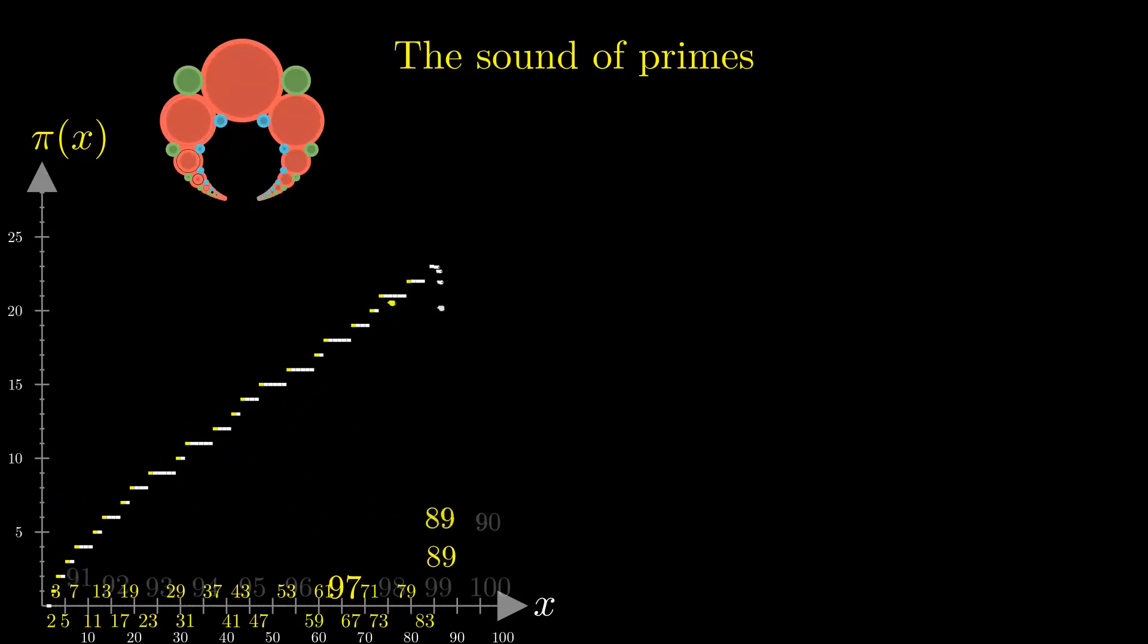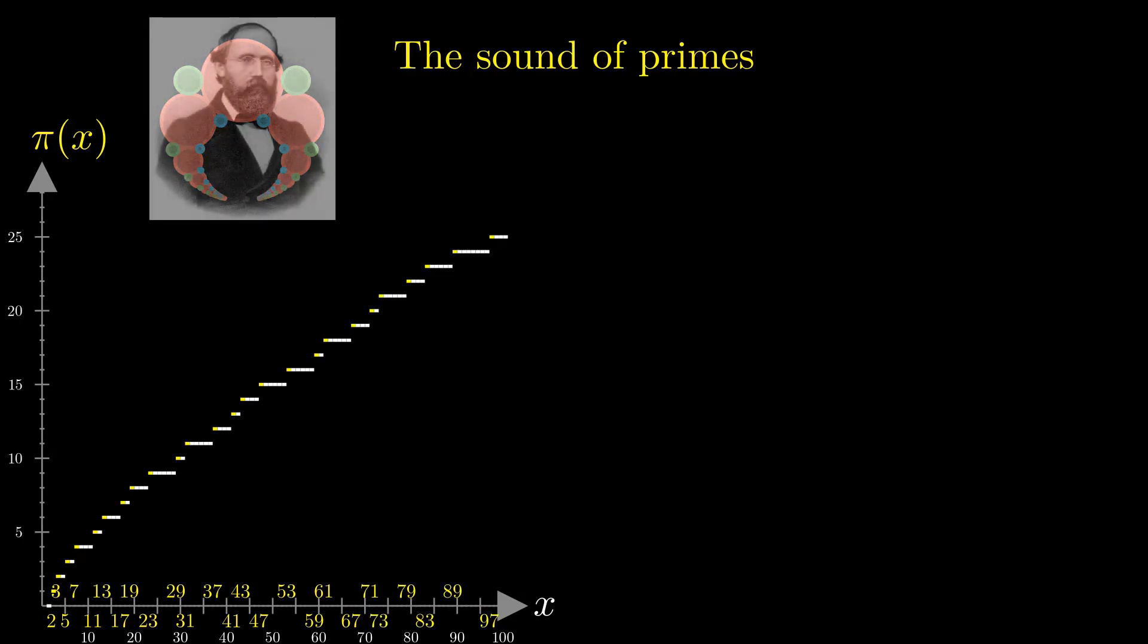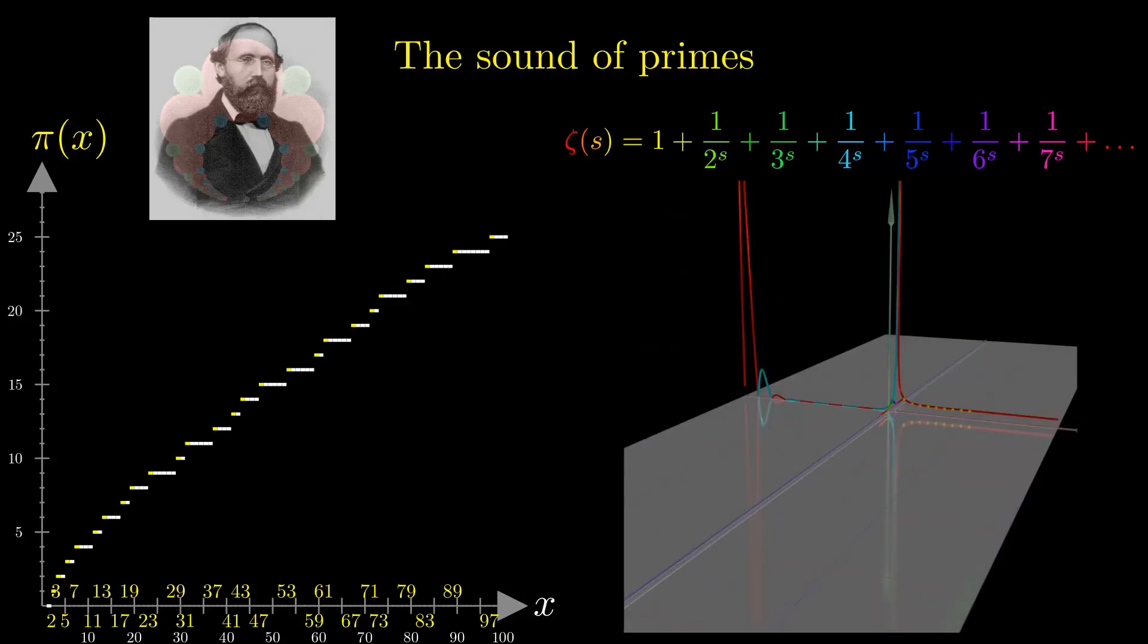Since centuries, mathematicians have tried to shed light on the distribution of prime numbers. It was only in 1859 when Bernhard Riemann was able to establish the connection between the occurrence of prime numbers and the zeta function.